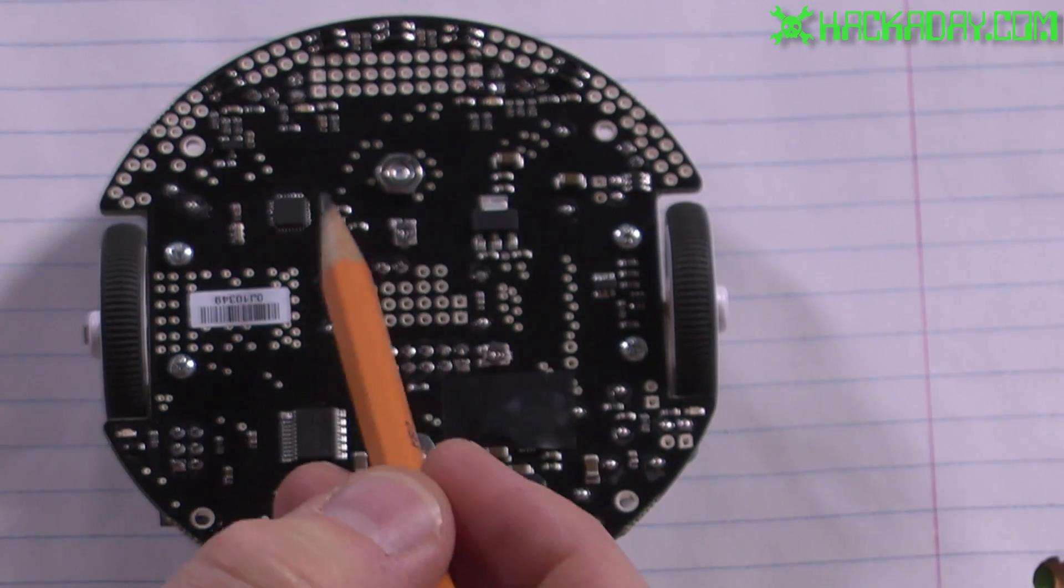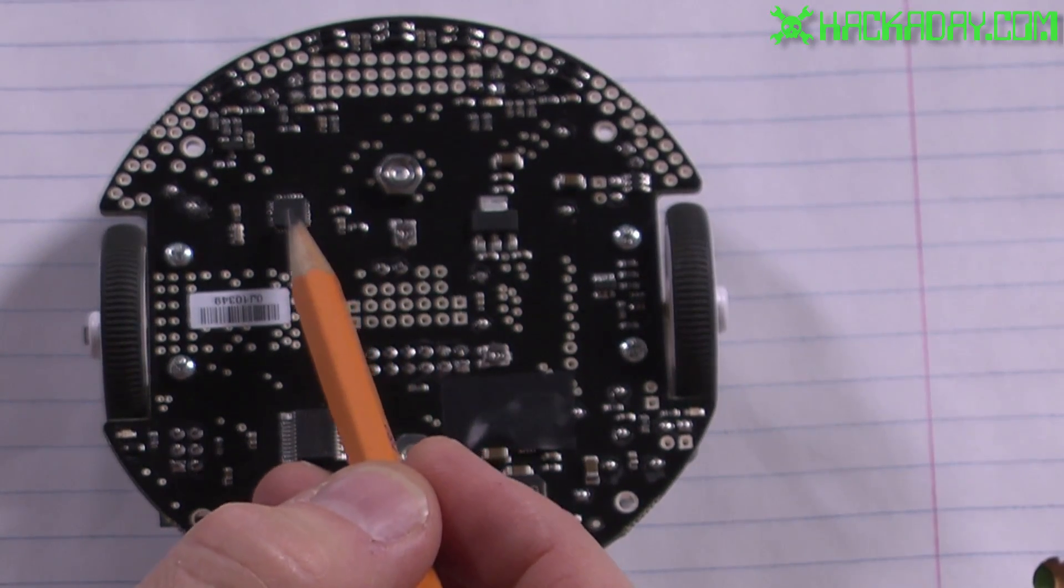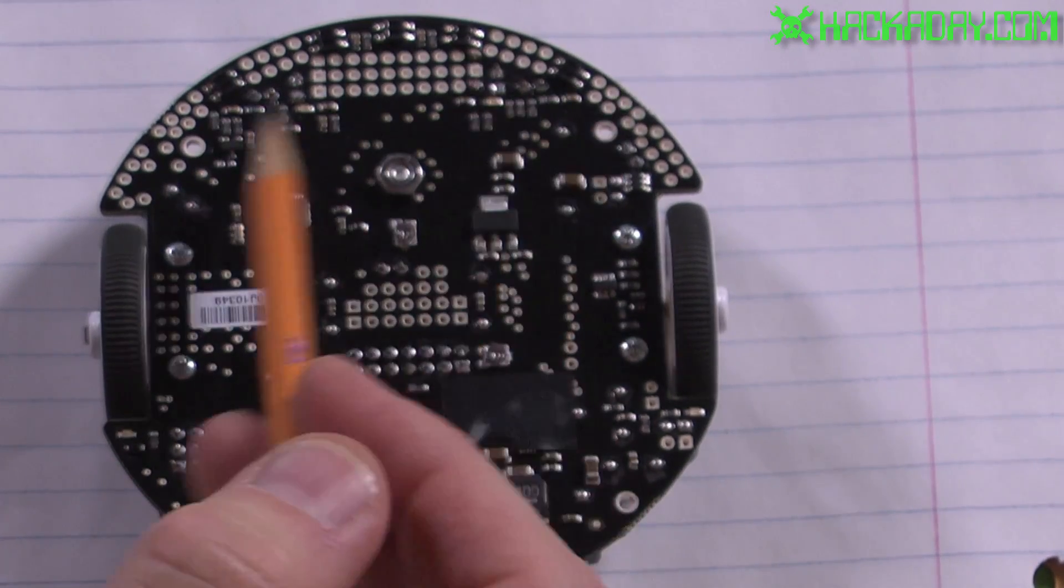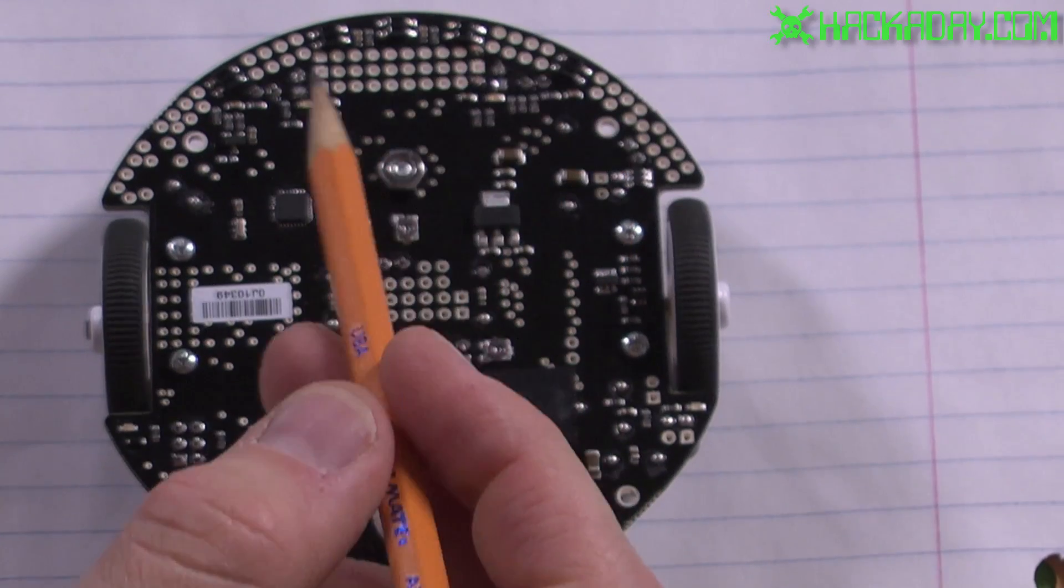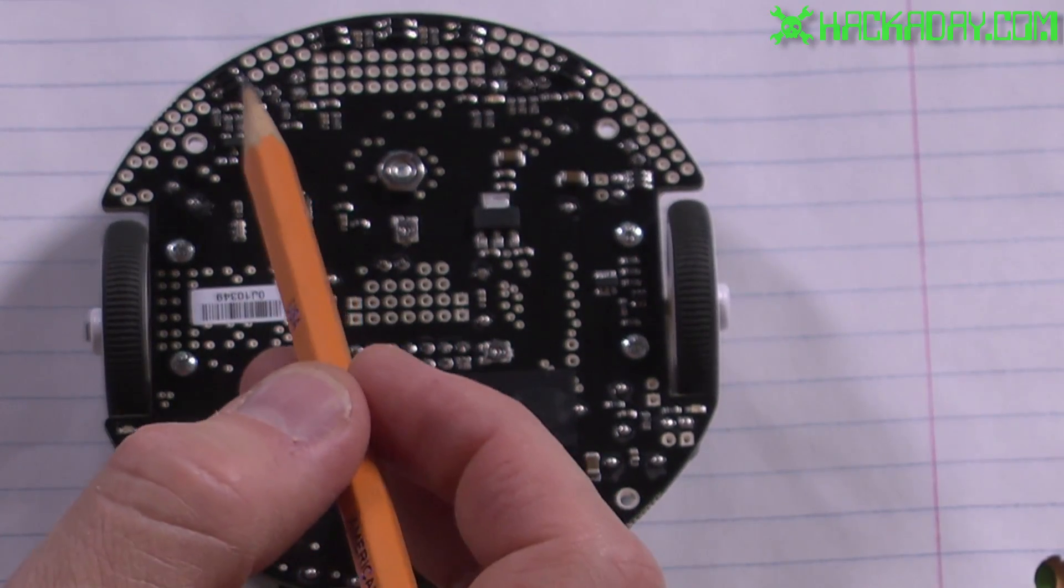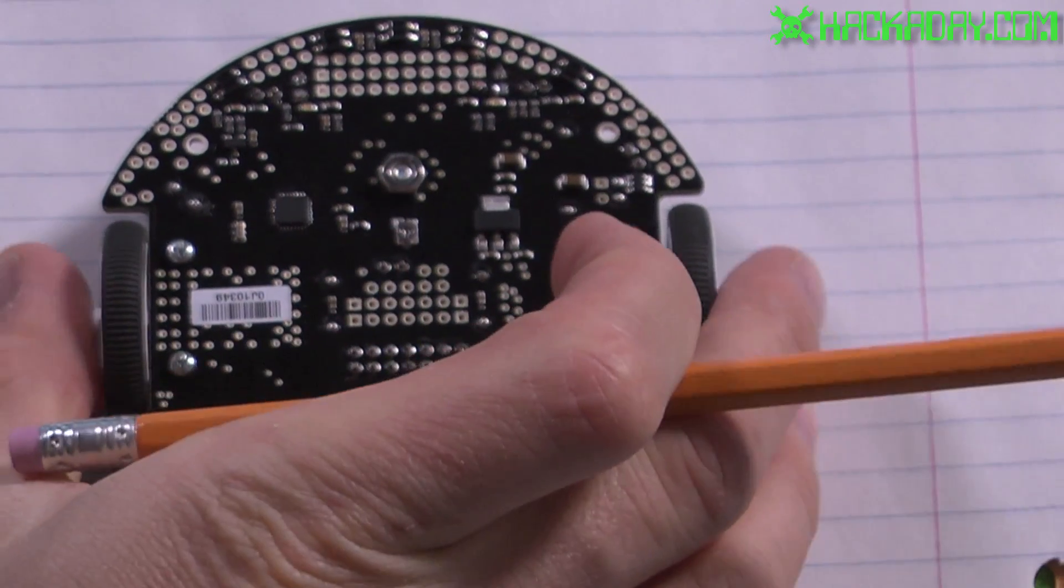Originally I had thought that the processor was going to be reading these with analog to digital conversion, but that turns out to be wrong. It's actually reading them in a digital manner. And let me draw you a little diagram of how this is hooked up.